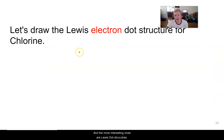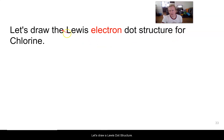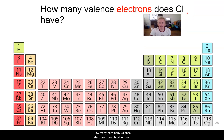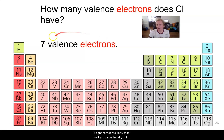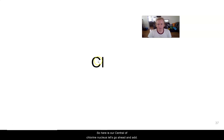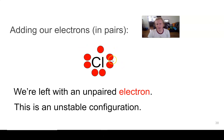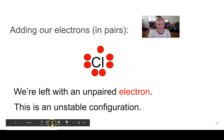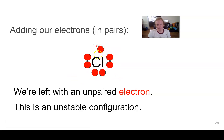The more interesting ones are Lewis dot structures. Let's draw a Lewis dot structure for chlorine. Chlorine has seven valence electrons — you can count them in the periodic table jumping over the transition metals: one, two, three, four, five, six, seven. So here is our central chlorine nucleus. We're going to add our electrons in pairs — three pairs of electrons — and we are left with one unpaired electron.